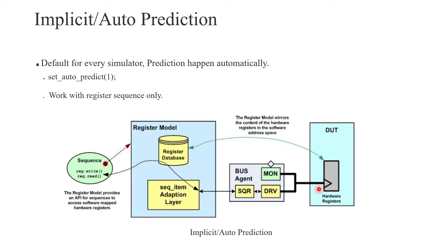The problem with auto prediction or implicit prediction is that each and every time we need to define a register sequence only. If we define a bus sequence, then the register database will not update — only the DUT register will update with the help of the bus sequence. So each and every time we need to define the register sequence.